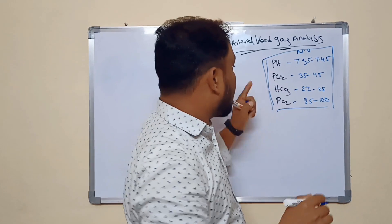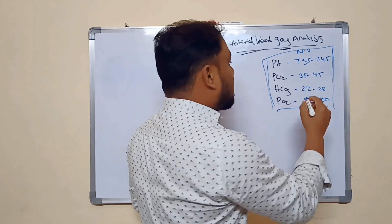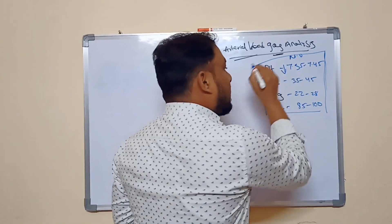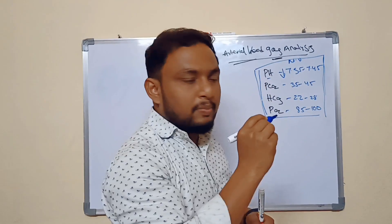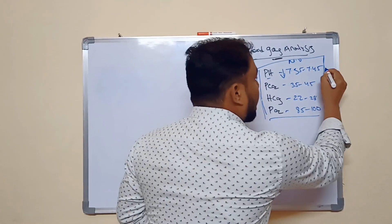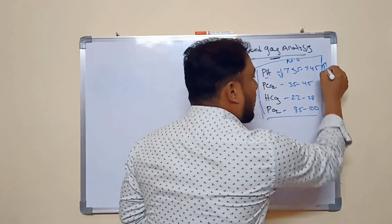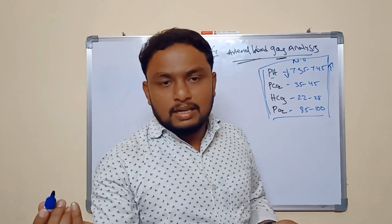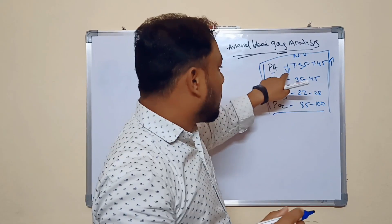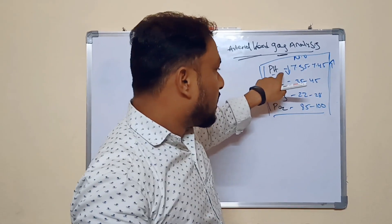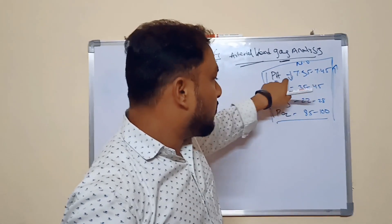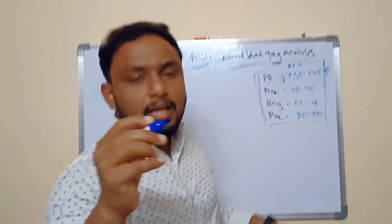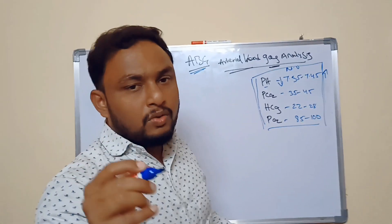Any deviation — for example, if pH is less than 7.35, that is a problem. And if it is more than 7.45, that is another problem. That's why we have to remember these values to interpret the ABG.